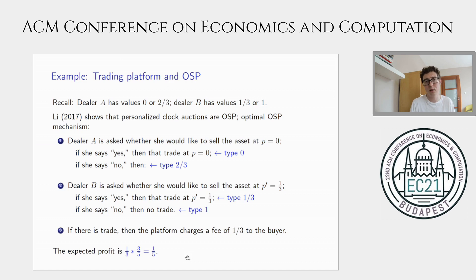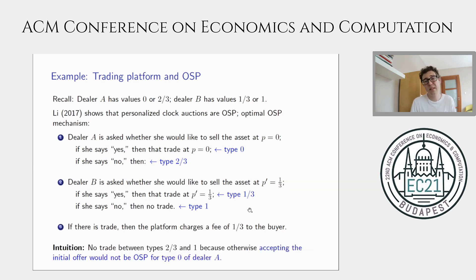I want to provide some intuition for why there is inefficient trade in this mechanism. Types two-thirds and one do not trade even though they could, and the intuition is the usual one: we distort the allocation rule to minimize information rents. In this case, we don't have efficient trade between types two-thirds and one because then type zero of dealer A would no longer have an obviously dominant strategy — she gets zero in equilibrium, but could get a strictly positive payoff if those two types traded at some price. This is why the mechanism, even though revenue-maximizing, is not efficient.